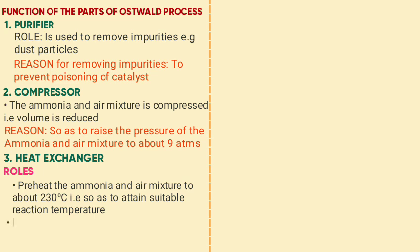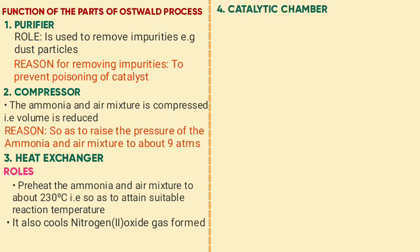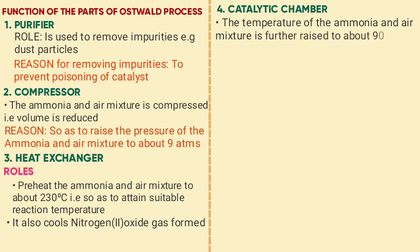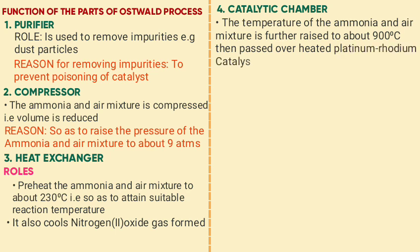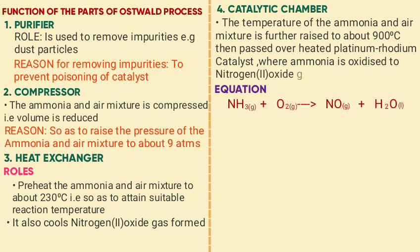In the catalytic chamber, the temperature of the ammonia and air mixture is raised further to about 900 degrees Celsius, then passed over heated platinum-rhodium catalyst, where ammonia gas is oxidized to nitrogen monoxide (NO) and water. The equation is: ammonia plus oxygen gives nitrogen monoxide plus water, balanced as 4NH3 + 5O2 → 4NO + 6H2O.